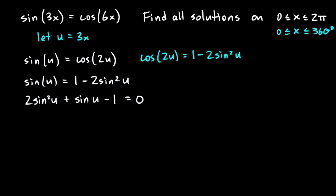So you get 2 sine squared u plus sine u minus 1 equals 0. And this will factor. This factors as 2 sine u minus 1 times sine u plus 1, and that equals 0. Let's just check that real quick. We should be able to do a FOIL here and get this. 2 sine u times sine u gives me 2 sine squared u, and then 2 sine u minus sine u gives me sine u, and then negative 1 times 1 gives me negative 1. So that's good.